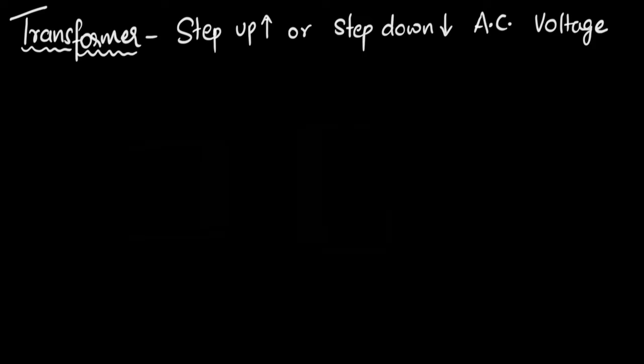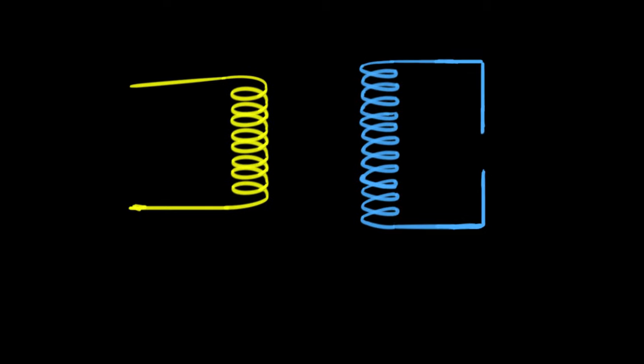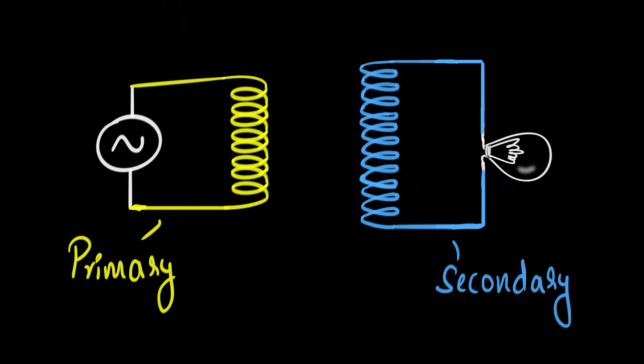Okay, what does that mean and how does it work? Well, at the core, the transformer is basically just two coils kept close to each other. One, which is connected to the supply, an AC supply, is called the primary coil, and the other, which is connected to some device which we want to run, we'll call that the secondary coil.